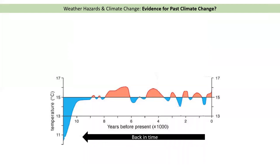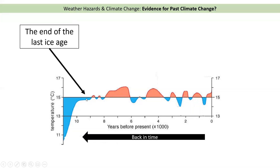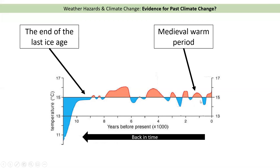Here we have a graph showing the last 11,000 years. This graph is a little different to a normal graph in that where I'm pointing is zero — today — and going back in time we go in this direction. So here's 2,000 years ago, 4,000 years ago, 6,000, all the way back to about 10,000–11,000 years ago. The areas in red are where temperatures are typically warmer — the average global temperature is above 15 degrees — and the areas in blue are colder periods. About 9,000 years ago was the end of the last main ice age, and about one to one and a half thousand years ago we had a warm period known as the medieval warm period.